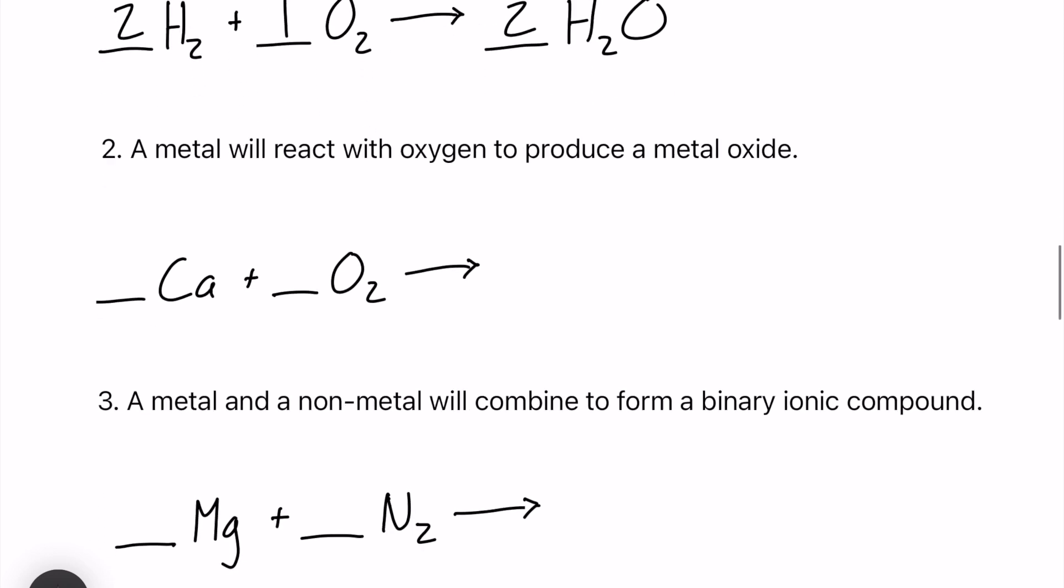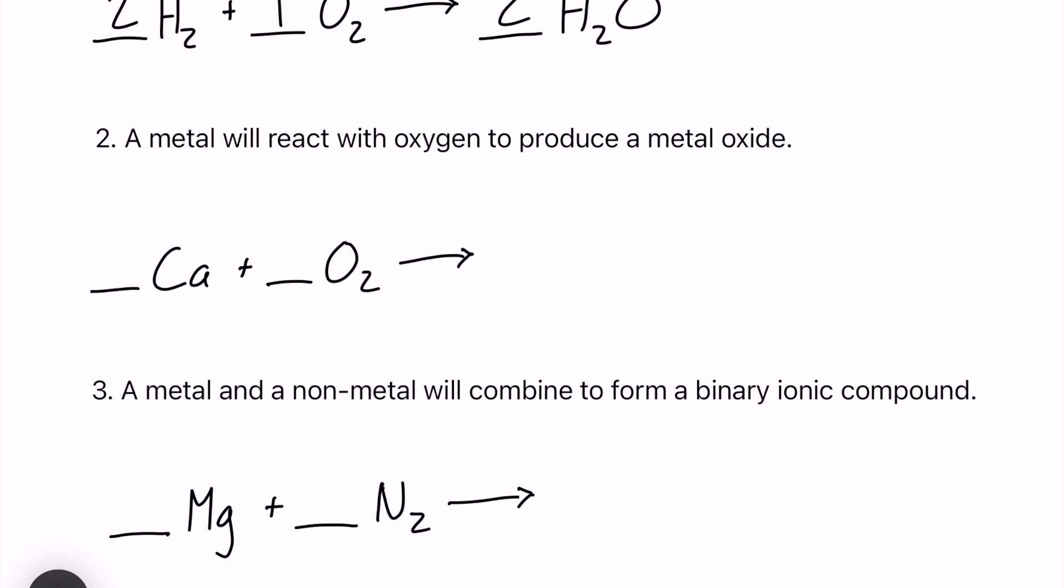The next one, we have a metal will react with oxygen to produce a metal oxide. So we have calcium and it's reacting with oxygen gas here. We have Ca2+ and O2-. Those are going to swap and drop. They will neutralize one another and we should just get CaO or calcium oxide. Let's balance this. We're going to have 2 in front of CaO, a 2 in front of Ca, and we have 2 oxygen already on the reactant side.